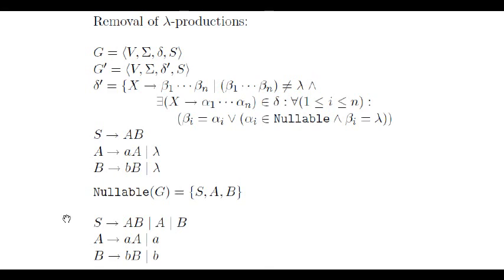The intuitive idea behind all this is the following. In the original grammar, before this transformation, we were able to rewrite S into AB. Moreover, A was nullable. Since we'll remove all lambda productions, it won't be nullable anymore. What we do is to look ahead and erase it in the first rewriting step. Each time we erase a nullable symbol from a right hand side, what we are doing is to look ahead and erase now what we want to be able to erase in a subsequent rewriting step, since now we do not have lambda productions.